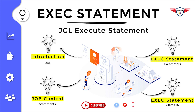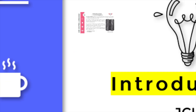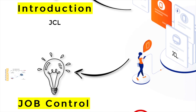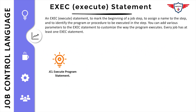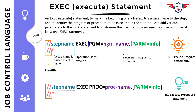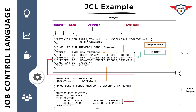The entire presentation is divided into four sections. First, an introduction to Job Control Language (JCL). Second, the different types of job control statements. Third, the definition of the execute statement and how to use it to execute a proc and a program, including the required parameters. Fourth, a sample JCL for a practical understanding of the execute statement.